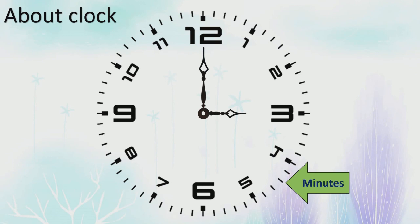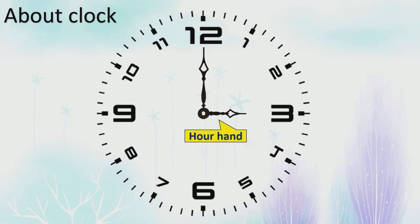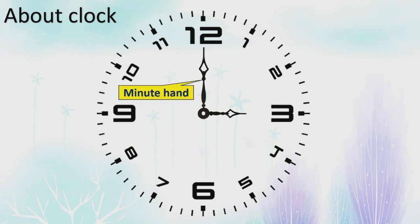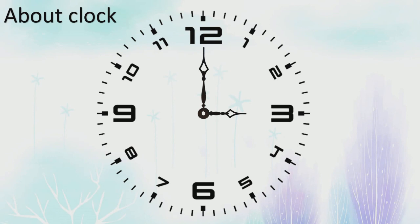Can you see the little pointers — arrow shapes? These two little pointers are known as hands. There are two hands on the clock. One is the short hand, which is known as the hour hand. Another one is the long hand, and it is known as the minute hand. The hands on the clock are not of the same size.